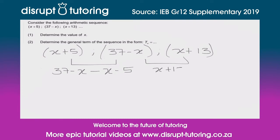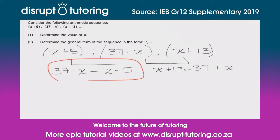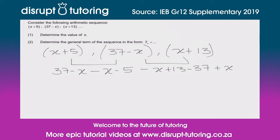And on the other side we've got (x plus 13) minus 37 plus x. The very important piece of information they've given us is that this is an arithmetic sequence, which means the first difference should equal the second difference. So we can equate them — that is the key step we need in order to solve for x.